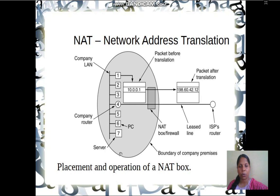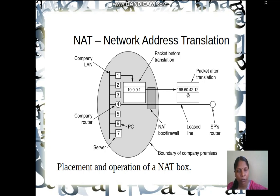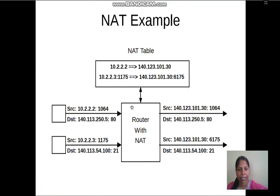The organization has computers numbered 1, 2, 3, 7, and so on. Node 4 is the router, node 7 is a server, and node 1 bears the IP address 10.0.0.1. This packet is about to move out of the organization. There is a Network Address Translation box where this private IP address is translated to the public IP address of the company, which is 192.60.42.12.